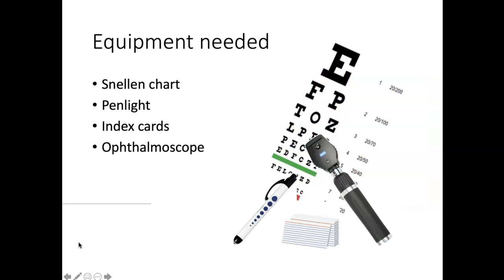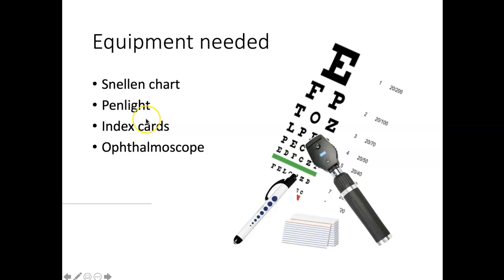Some equipment you would need for an eye assessment: a Snellen chart — you probably will not have access to one for this course, but most of you are familiar with it. That's the chart with all the letters that you read from at least 20 feet, usually one eye at a time and then both eyes. A pen light — everybody should have one — as well as an index card to cover the eye. We will not have ophthalmoscopes for this class this summer.